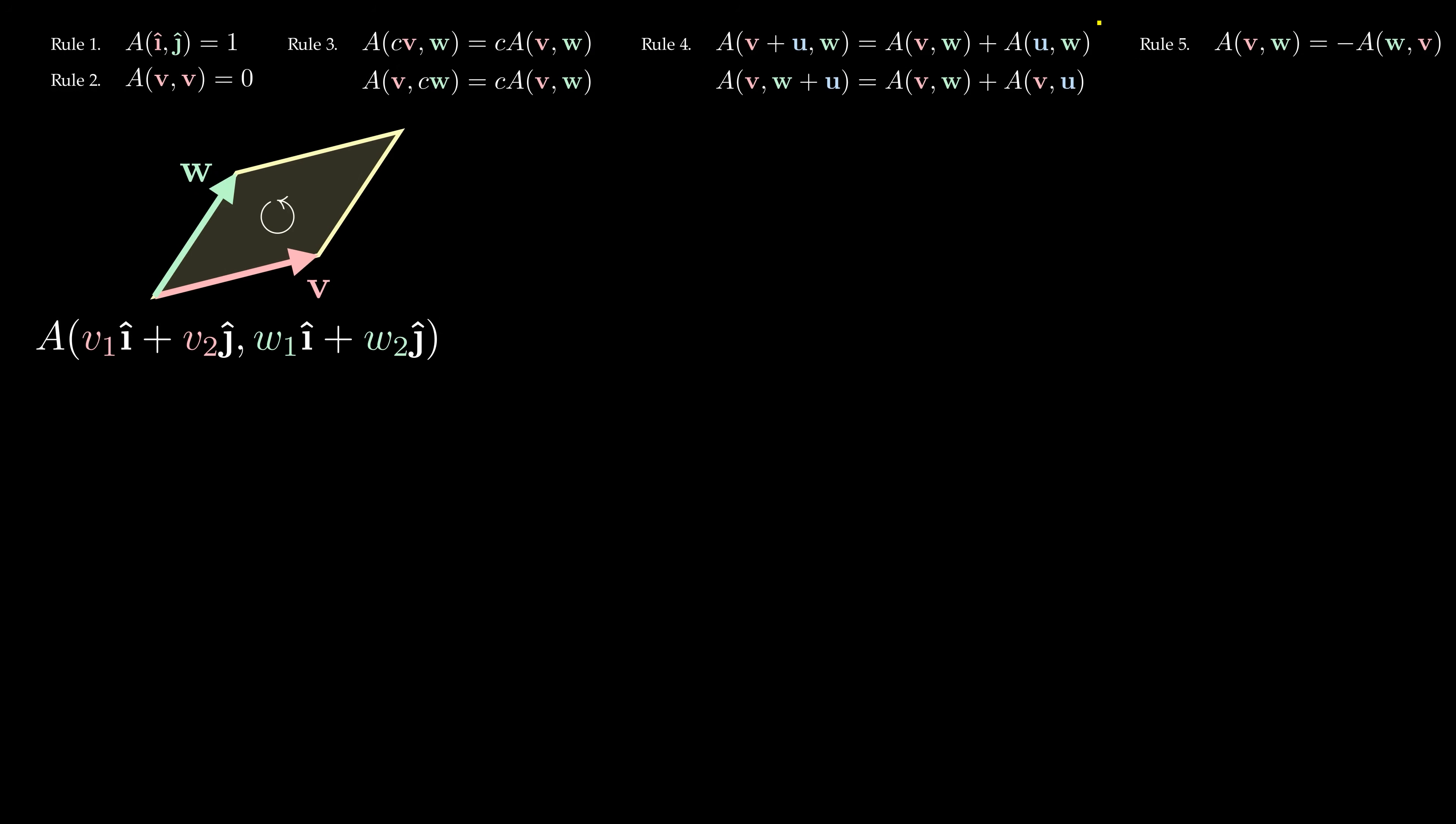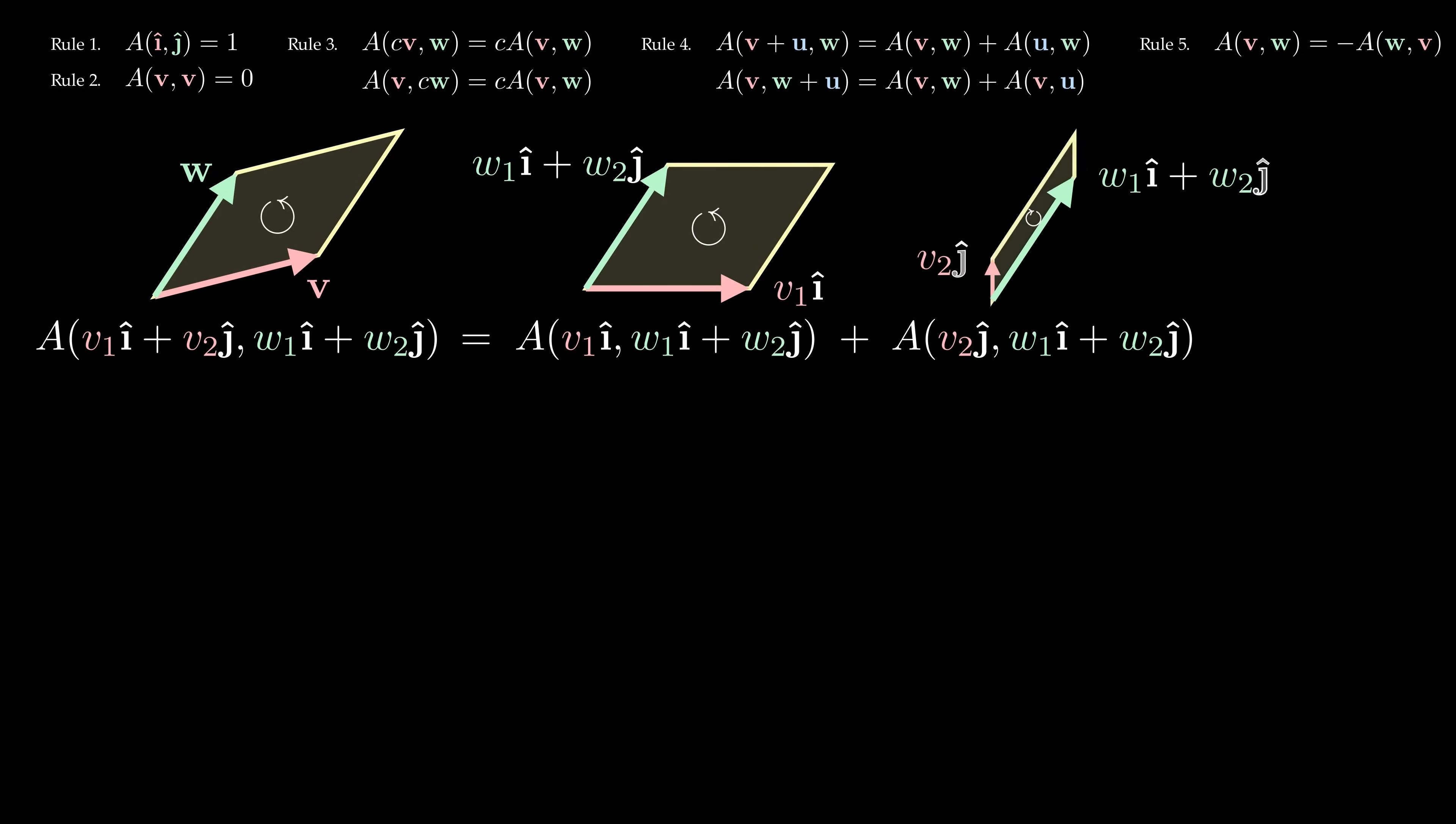By rule 4, we can split the first area term into a sum of two area terms. Then, we can apply rule 4 again, to split those two area terms into four area terms.